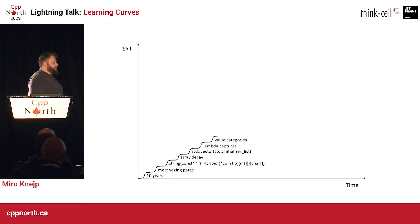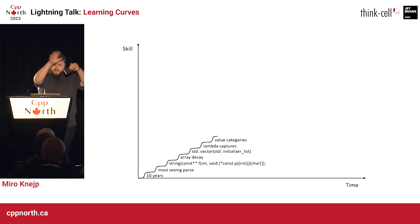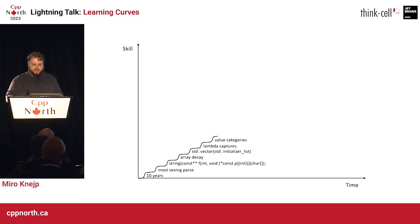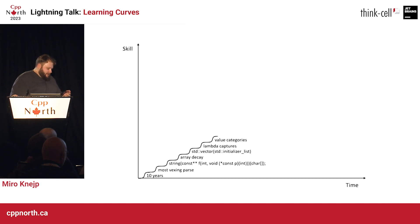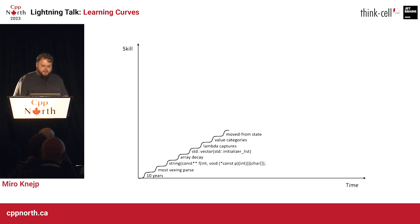And value categories — because L-value and R-value is too easy. So we need an entire graph; I think it's the only graph in the standard that lists the value categories. Well of course, that involves moving and a moved-from state, which — oh, that's a thing now. Okay, cool.